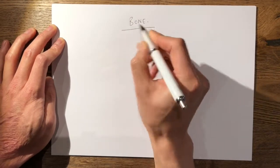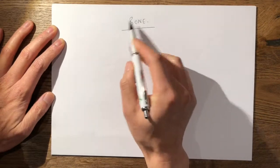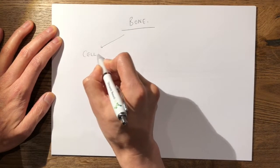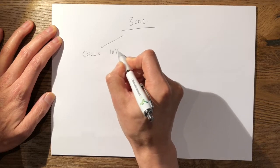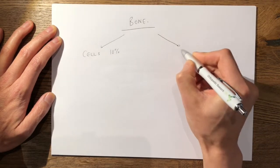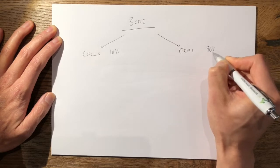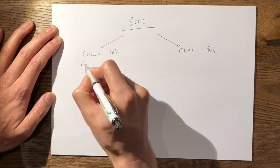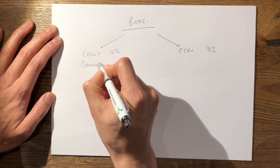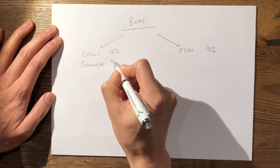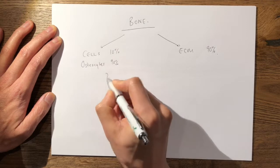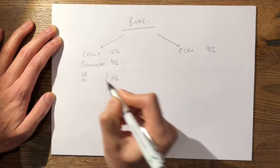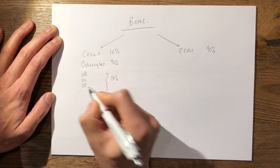When you think about the composition of bone, think of it in a hierarchy. Bone is composed of cells, which is approximately 10 percent, and extracellular matrix, the other 90 percent. The cells—the vast majority are osteocytes, approximately 90 percent, and the other 10 percent are made up of osteoblasts, osteoclasts, osteoprogenitor cells, and bone lining cells.